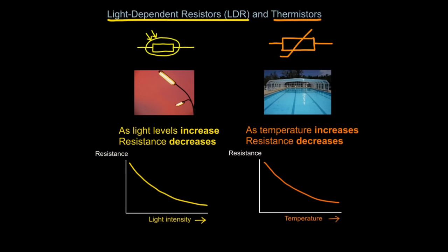And you can see these graphs represent that. So as light intensity is increasing, resistance in the LDR is decreasing. And as temperature is increasing, resistance in the thermistor is decreasing.